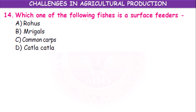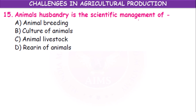Which one of the following fishes is the surface feeder? From the list of rohu, mrigal, common carp, and katla — katla is the fish which is the surface feeder. Animal husbandry is the scientific management of animal livestock, including animal breeding, culture, and rearing of animals.